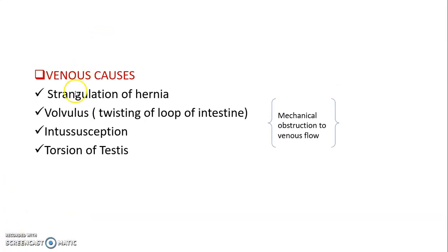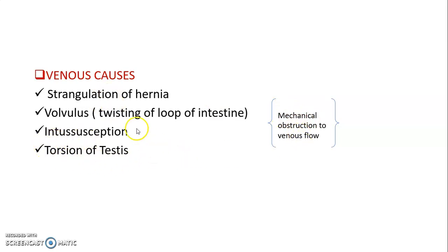Venous causes include strangulation of hernia, volvulus (twisting of a loop of intestine), and intussusception. These three are mechanical obstructions to venous flow. Another cause of venous obstruction is torsion of the testis.